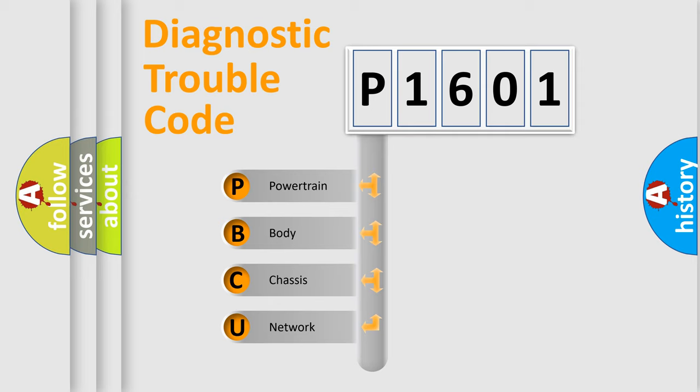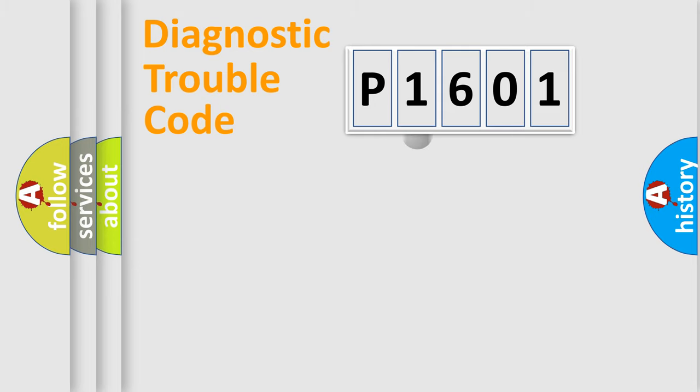We divide the electric system of automobile into four basic units: Powertrain, Body, Chassis, and Network. This distribution is defined in the first character code.